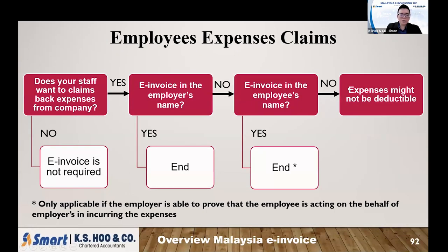The general process for claiming expenses: the staff must have an e-invoice under the company name or the employee name. If it is under the company name, no issue. If it is under the employee name, make sure you have updated your company policy. If at the end the employee is unable to get an e-invoice for the expenses and only has a normal invoice without an e-invoice, those expenses will not be eligible for tax deduction.